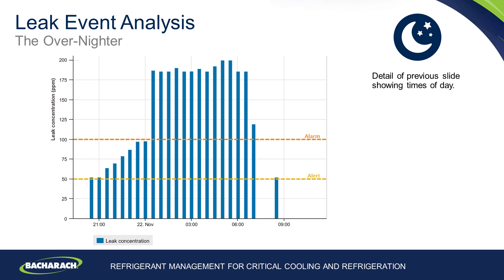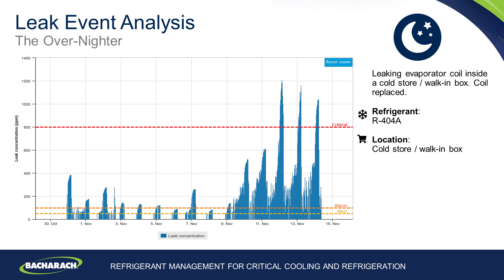From 6am onwards the PPM values disappear as that asset is used by store staff moving goods in and out of it. Here we have another example of a leak inside a walk-in box or cold store. Again you can see the pattern — PPM values rising during the night-time period when the asset is not used and dropping away during the day as the asset is used and PPM values dissipate with airflow.